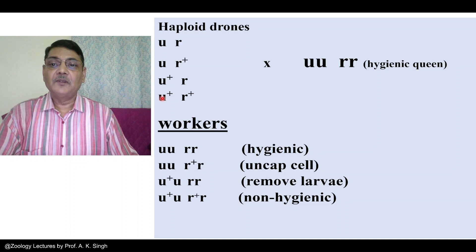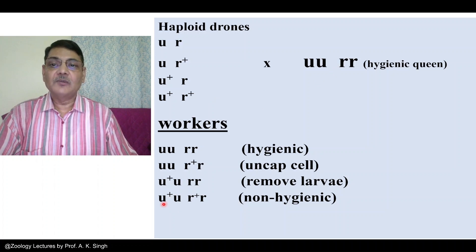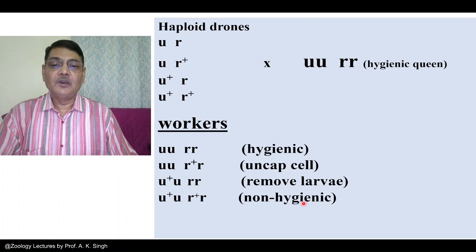If the male of genotype U-plus R-plus mates with the UURR queen, you will have workers of genotype U-plus U and R-plus R. Such workers will be non-hygienic — they will neither be able to uncap the cell nor remove dead larvae from the cell.